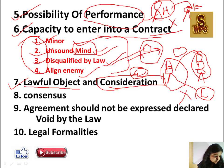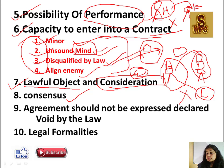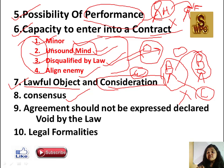Next point: Consensus (Consequence). Consequence yeh hota hai ki agar Mr. A ne Mr. B ke saath contract kiya toh Mr. B bhi wohi samjhe jo Mr. A batana chahta hai - koi alag assumption na kare. Mr. A X topic describe kar raha hai aur Mr. B Y topic samajh ke baitha hai - yeh nahi hona chahiye. Mr. A jo samjhana chahta hai, Mr. B ke mind mein bhi wohi thought honi chahiye.